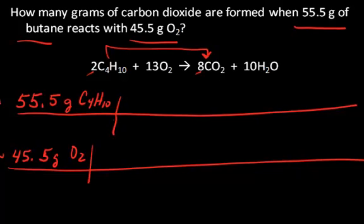The molar mass of butane is about 58 grams per mole. I'll put the gram unit on the bottom of my calculation so that I can cancel out the gram unit and I'm now in units of moles.